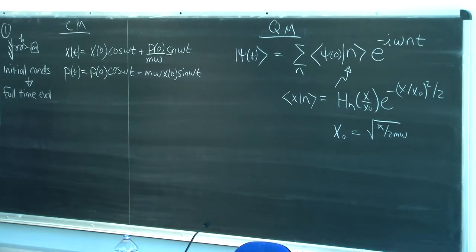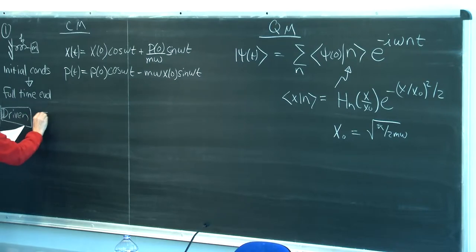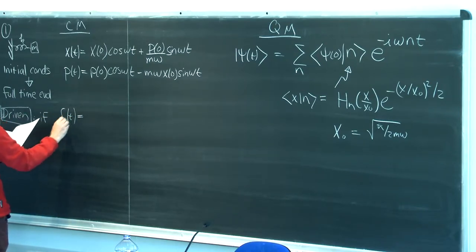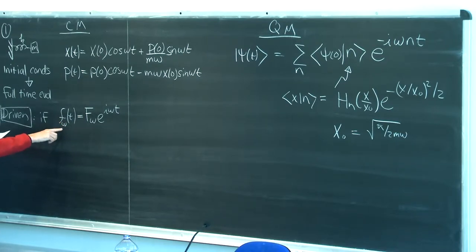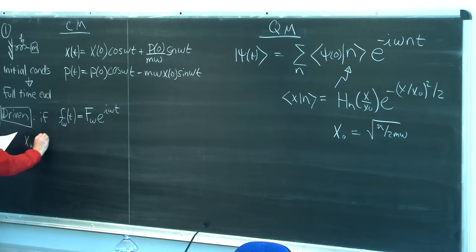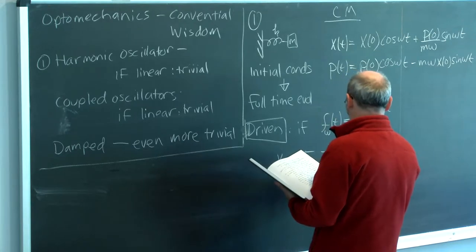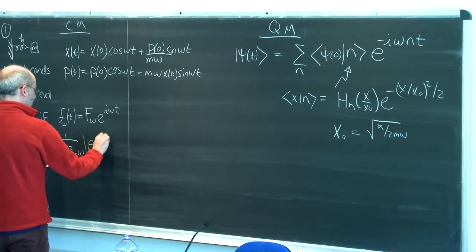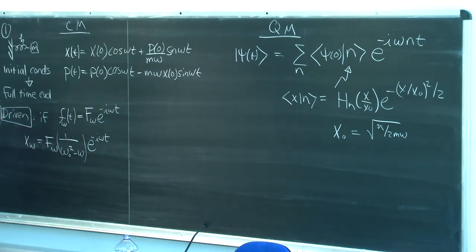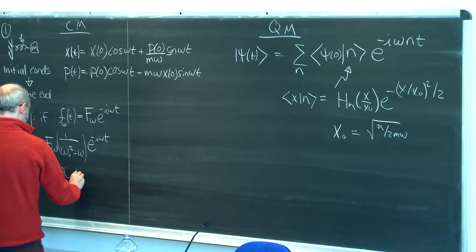Now if we add driving to this system, not much really changes—at least things don't get much less trivial. If the force doing the driving is harmonic in time, an oscillatory force at frequency omega, then the resulting motion is just given by its amplitude, a factor that asks whether or not the frequency is being applied at or near resonance, and the motion is at the same frequency as the applied drive. We tidy this up by defining the susceptibility of the oscillator at frequency omega.